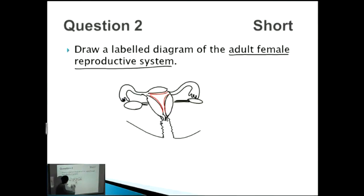Let's label those different ones. So we've got fallopian tube, you've got ovary, you've got uterus.